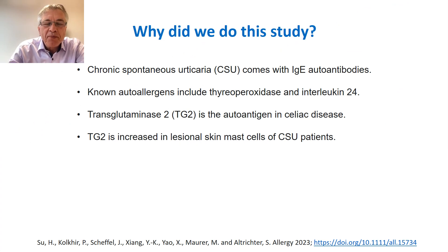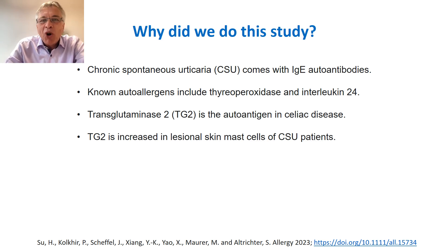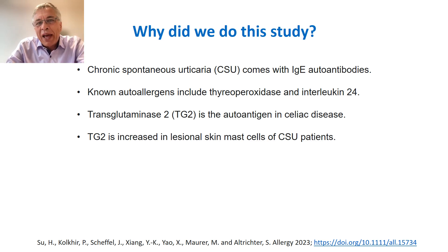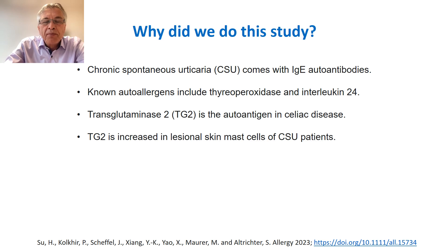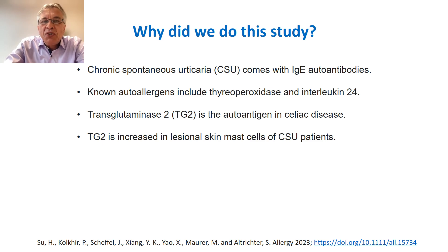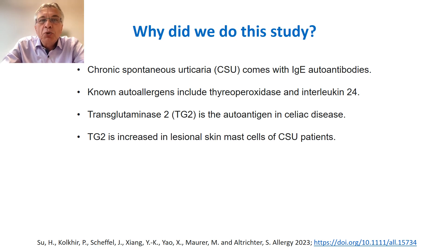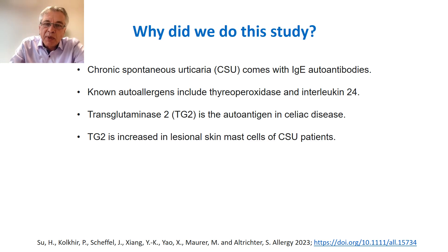Why did we do this study? We know that chronic spontaneous urticaria comes with IgE autoantibodies — autoallergy — and we also know that some of the auto allergens in chronic spontaneous urticaria, for example thyroid peroxidase or interleukin 24. Transglutaminase 2, or TG2, is the autoantigen in celiac disease, and TG2 is increased in the lesional skin of patients with chronic spontaneous urticaria.